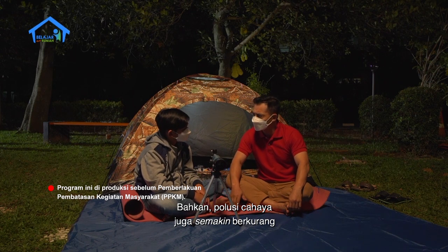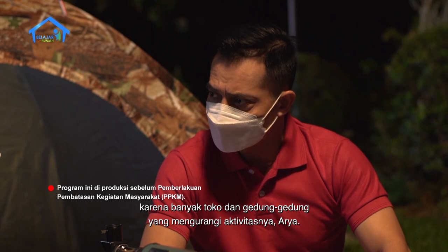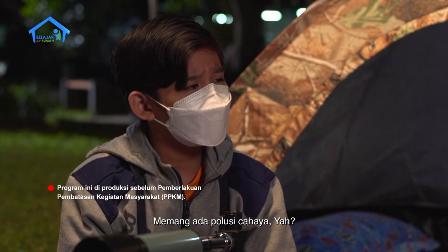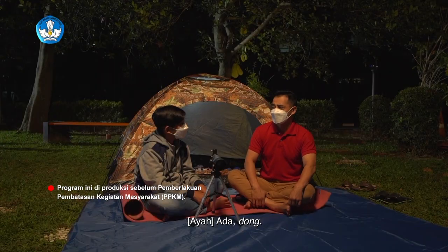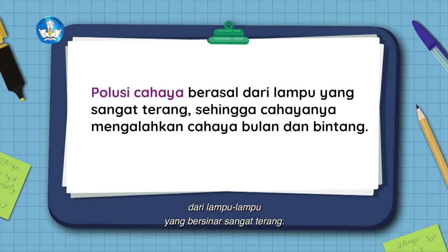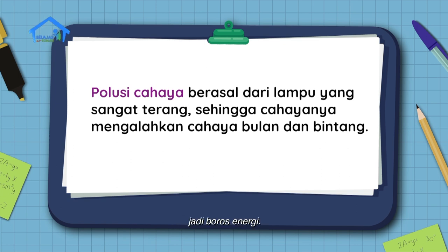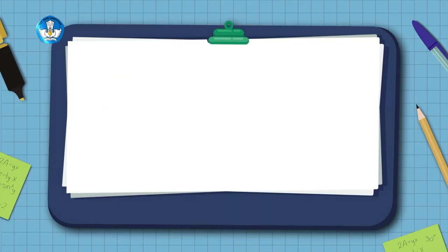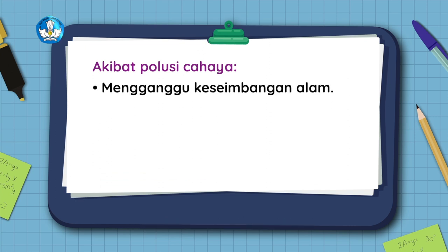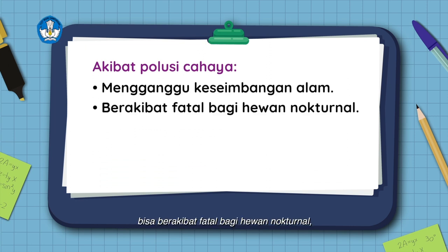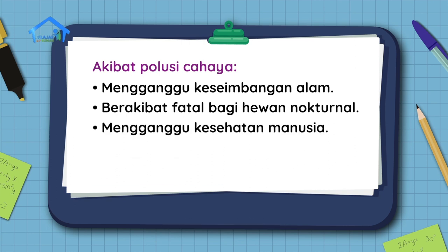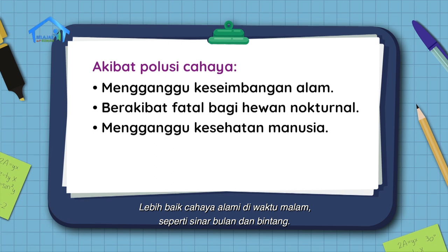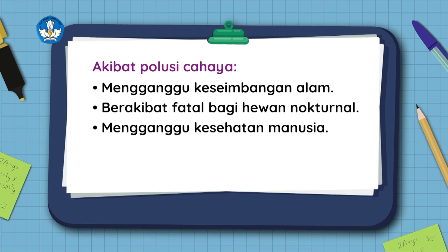Bahkan, polusi cahaya juga semakin berkurang karena banyak toko dan gedung-gedung yang mengurangi aktivitasnya, Arya. Memang ada polusi cahaya ya? Ada dong. Polusi cahaya itu berasal dari lampu-lampu yang bersinar sangat terang. Terlalu banyak lampu yang bersinar terang itu jadi boros energi, dan sinar-sinar lampu itu menghalangi sinar bulan dan bintang di langit. Polusi cahaya juga bisa mengganggu keseimbangan alam, bisa berakibat fatal bagi hewan nokturnal, pun bagi kesehatan manusia. Lebih baik cahaya alami di waktu malam seperti sinar bulan dan bintang.